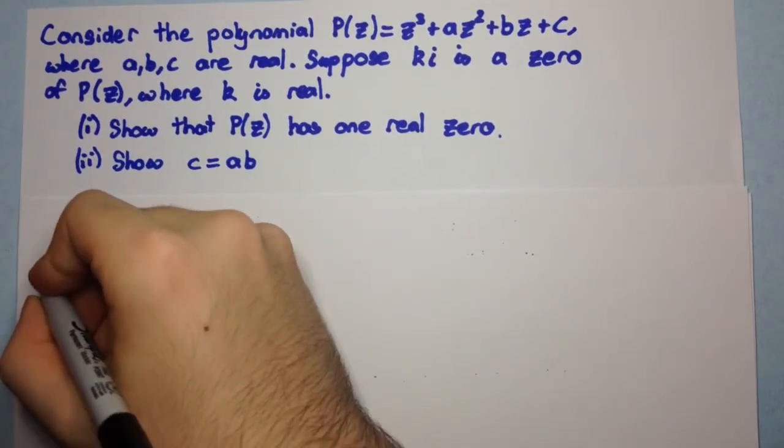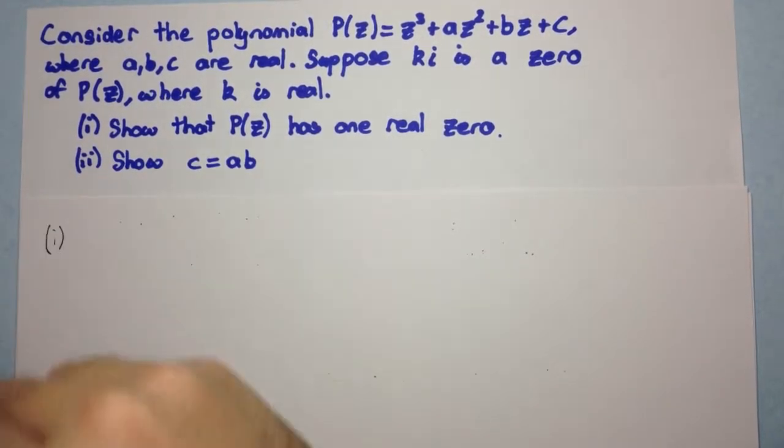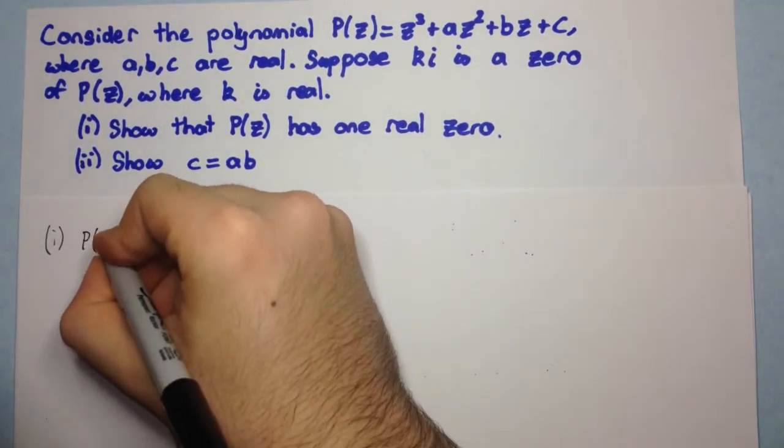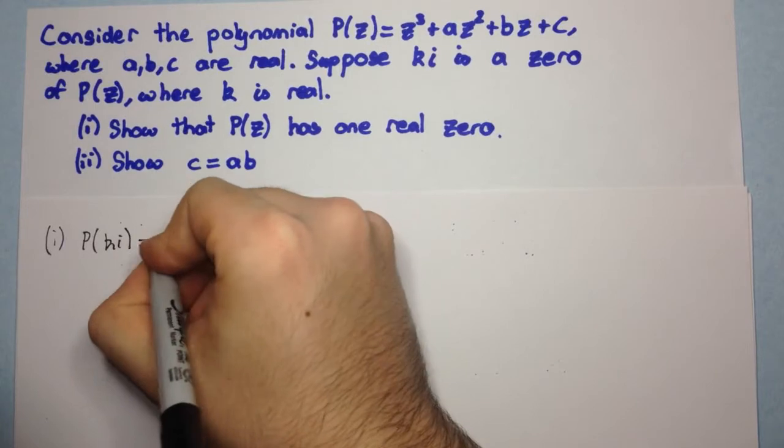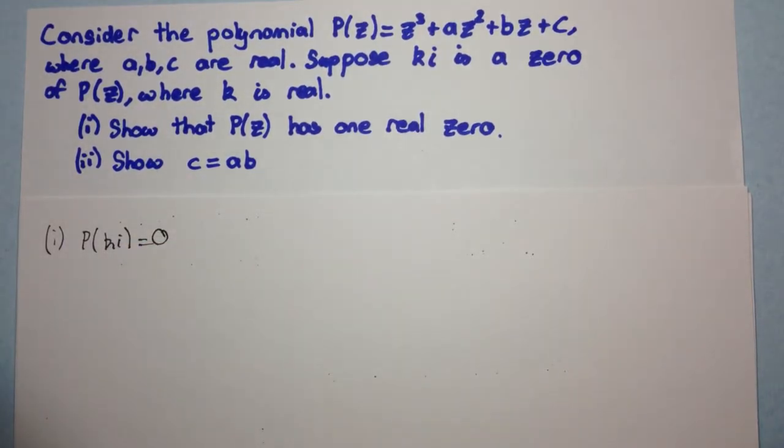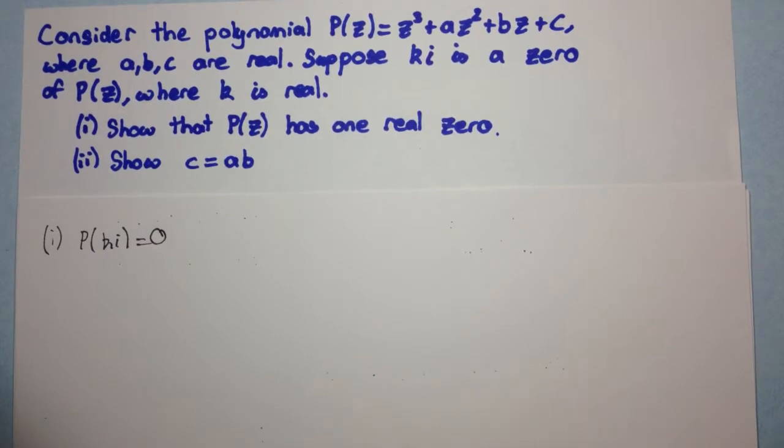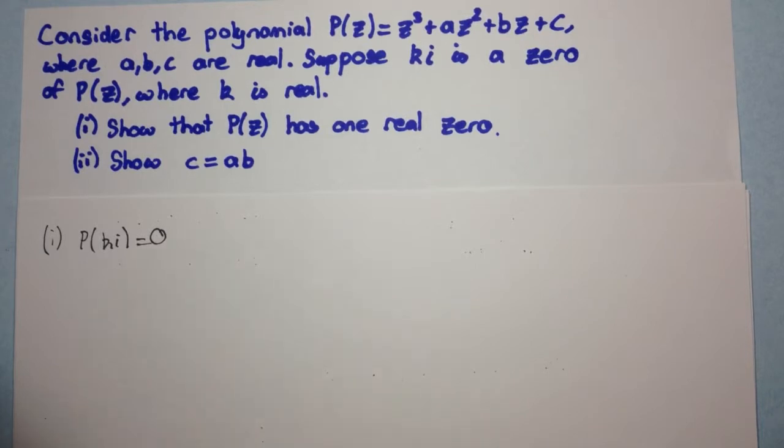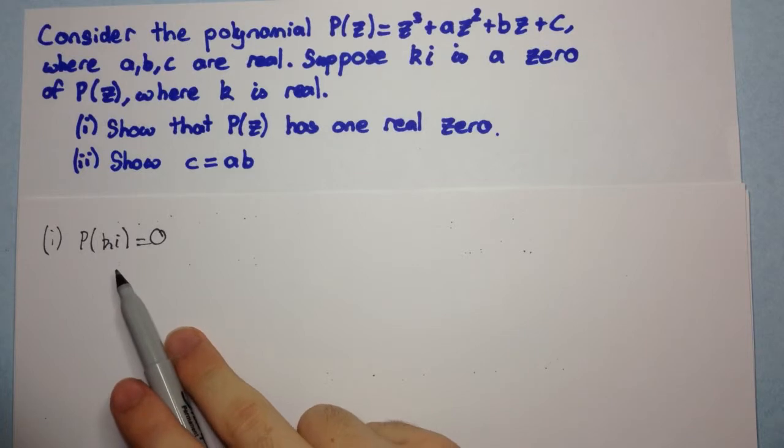Okay, so the first part here. We're given that P of Ki is equal to zero. Now, this number Ki is a purely imaginary number, and the reason it's purely imaginary is because K is real. If K wasn't real, so if K was like a complex number, then it has a possibility of not being purely imaginary, rather.